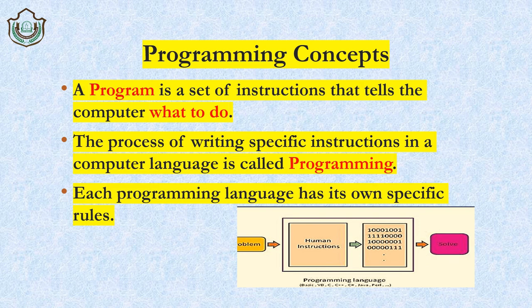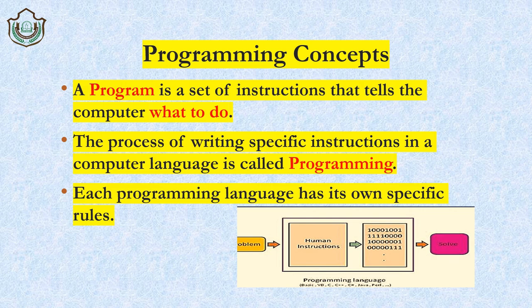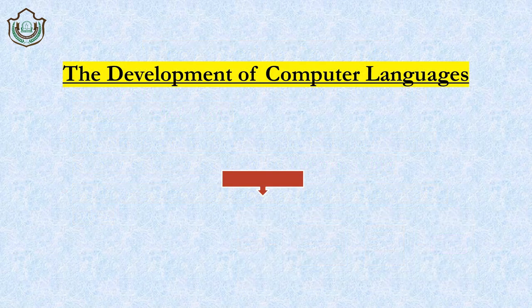Programming is the process of writing specific instructions in a computer language. The instructions we give to the computer are processed in its own language — that is known as a program. Every language has its own protocol and specific rules, just like every teacher has their own rules in class. Similarly, computers have separate rules and regulations for their programming language.